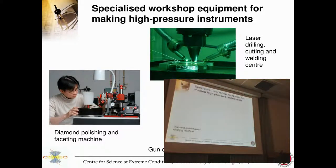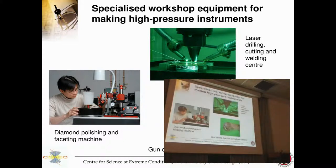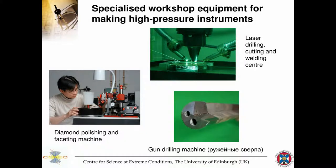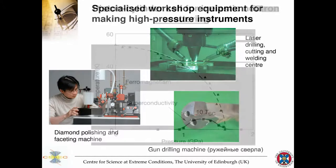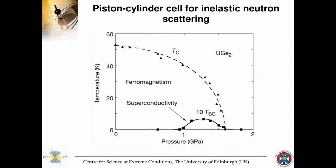Major FEA packages include ANSYS, Abaqus, and Nastran — industry standard engineering software. For making pressure cells, you also need specialized machines such as diamond polishing machines, laser cutting for tough gaskets, and gun drilling machines that allow you to drill very long parallel bores for piston cylinder cells.